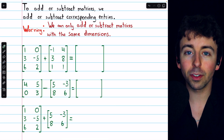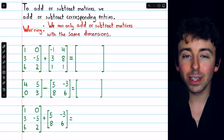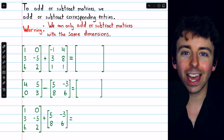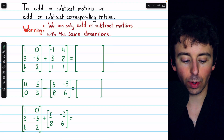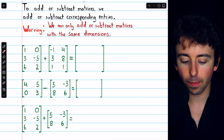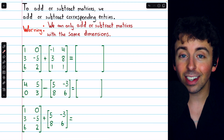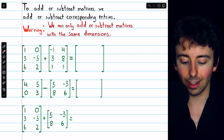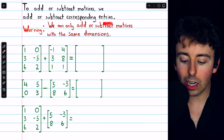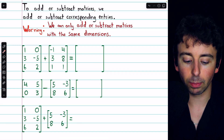Matrices wouldn't be very useful if we couldn't do math with them — and of course we can. We can add matrices, we can subtract them, and there's much more we can do. To add or subtract matrices, we just add or subtract their corresponding entries. For this to have meaning, the matrices need to have the same dimensions. We can only add or subtract matrices with the same dimensions.